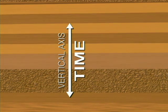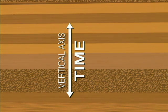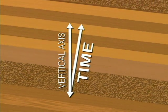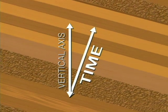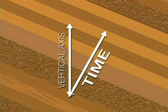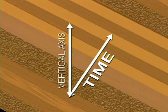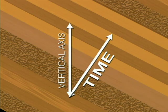The key measurement is the thickness of strata, and measurement of this thickness is easy when layers are horizontal. But what if geologists encounter bedding that is no longer horizontal, where the time axis no longer corresponds with the vertical axis?